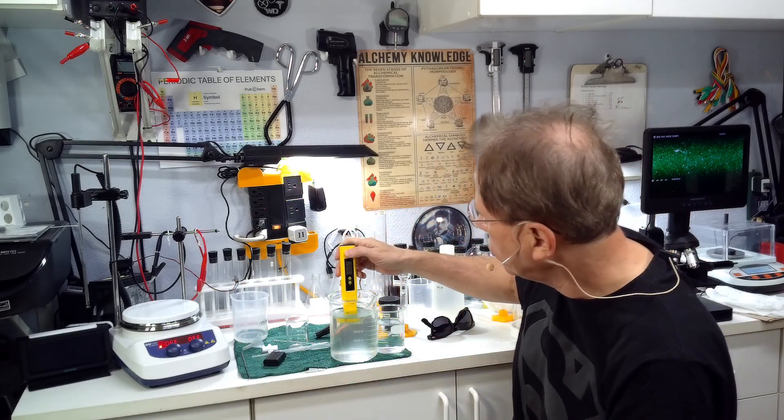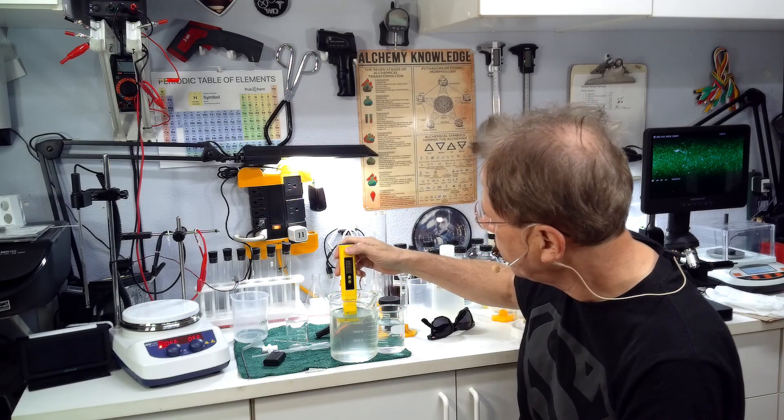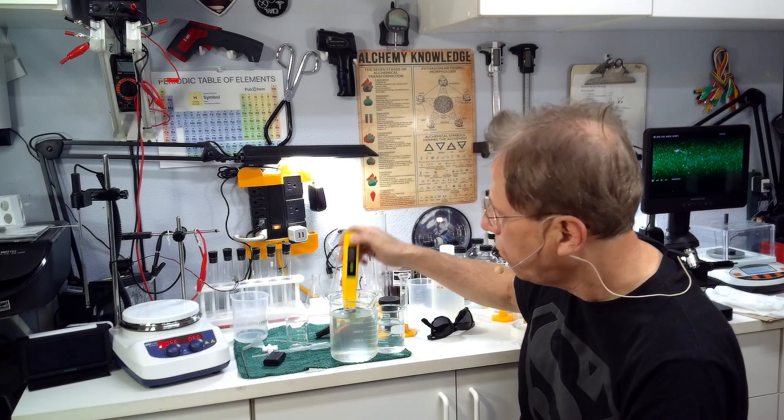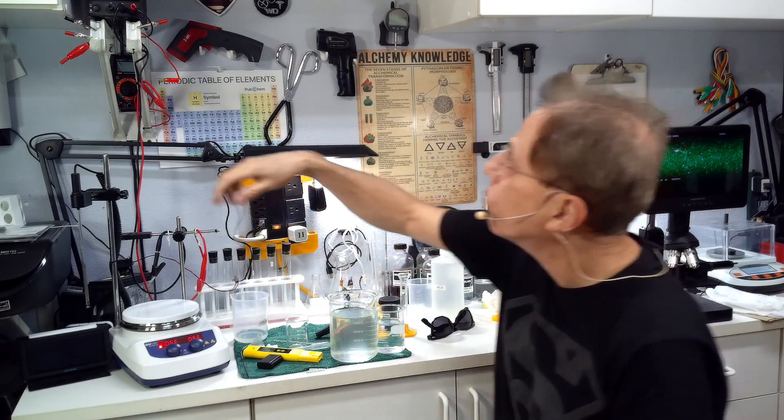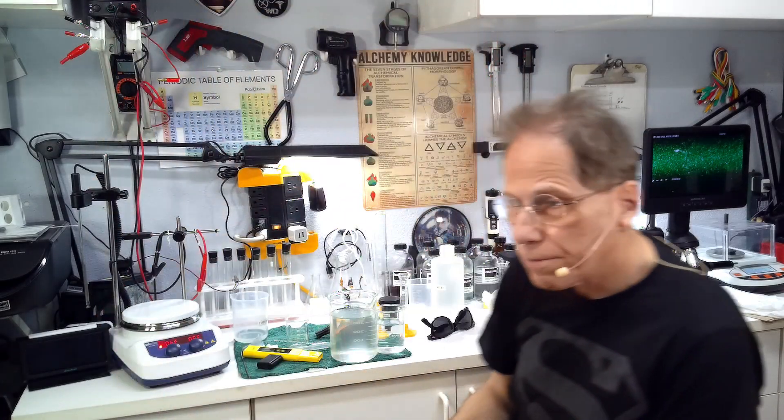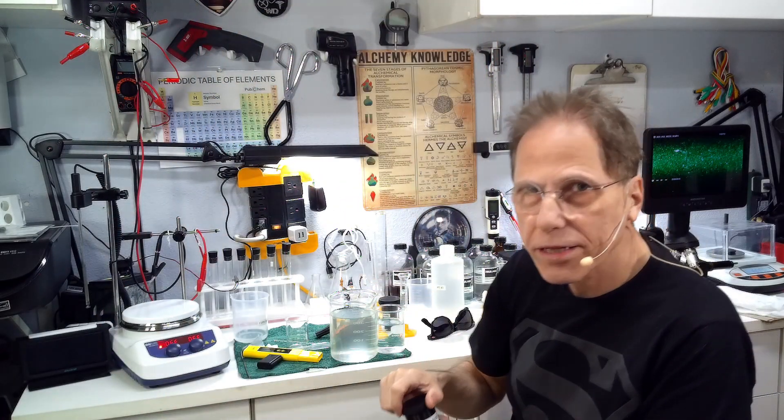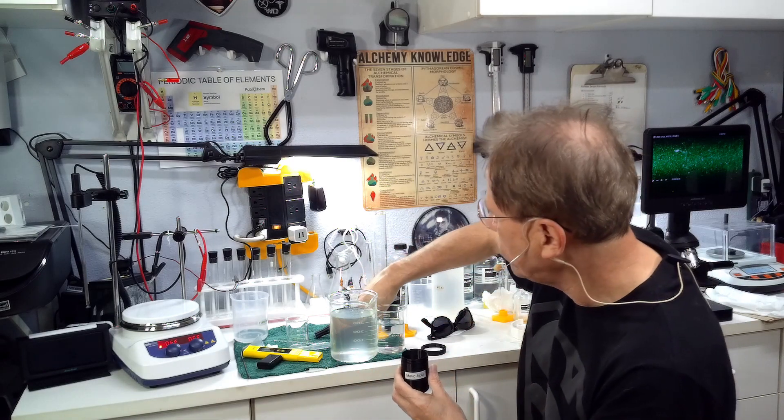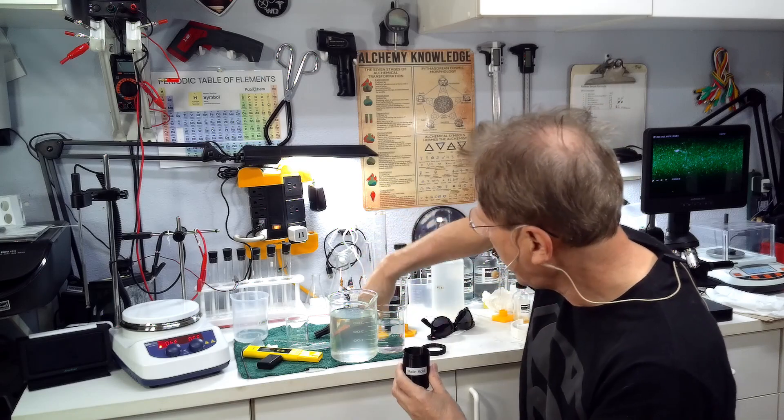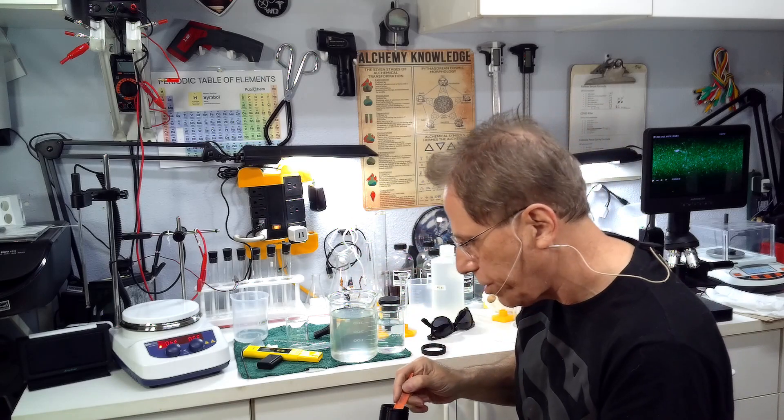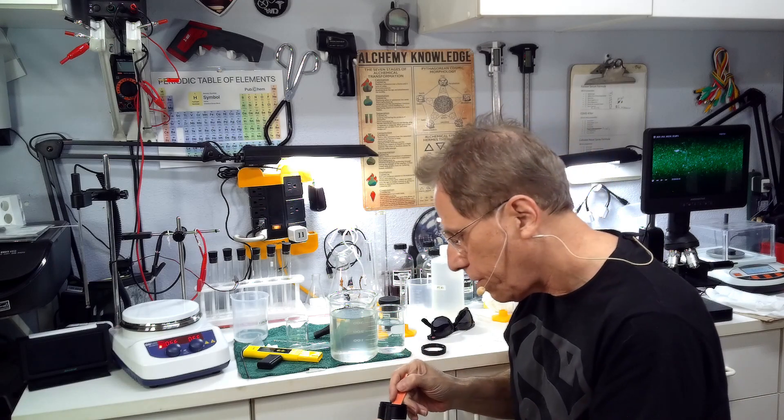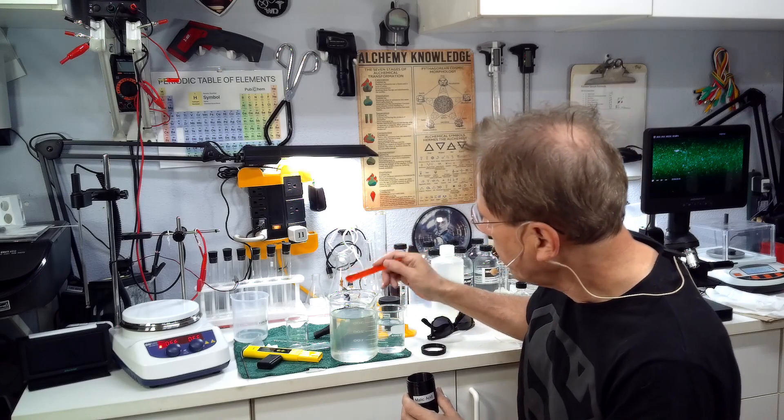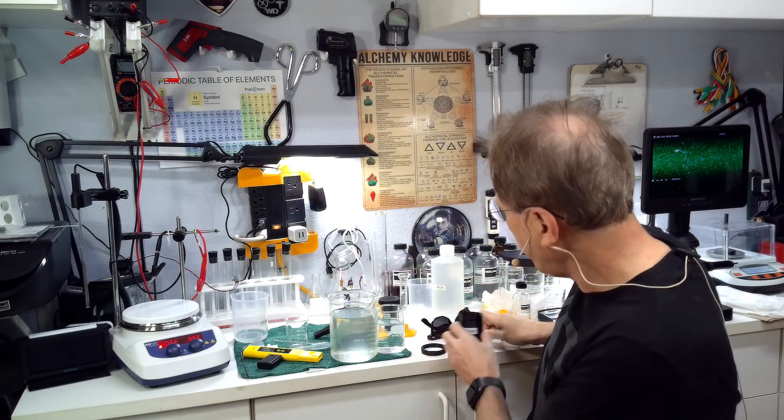We're going to take our pH meter, stick it in the solution here, measure the pH, and we got a pH of 8.4, which isn't bad. 8.4 is drinkable but let's bring it down to seven. I'm going to use malic acid. I am going to use a very tiny amount of malic acid because this is very strong. You can use citric acid too or even lemon juice.